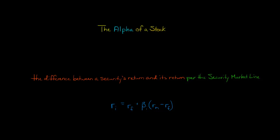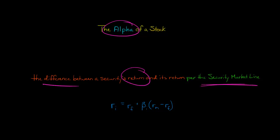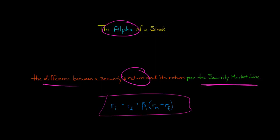In this video, we're going to discuss the alpha of a stock. Alpha is just the difference between a security's return and the return that's predicted by the security market line. The security market line is the visual representation and the graphing of the capital asset pricing model.